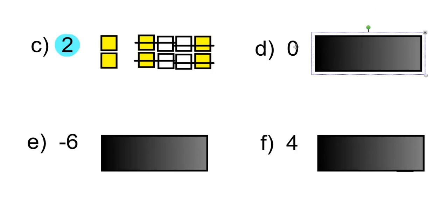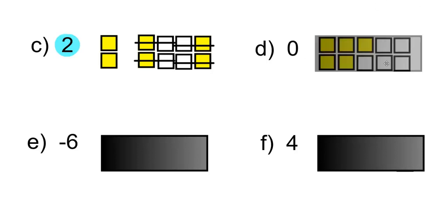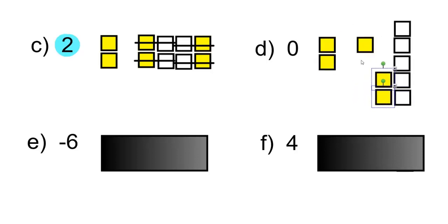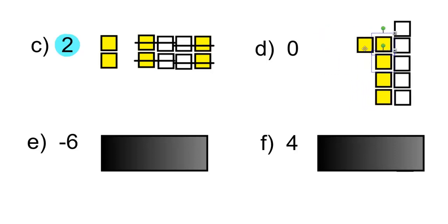D. Zero. There'll be 5 positive and 5 negative tiles. Cancel out the zero pairs.